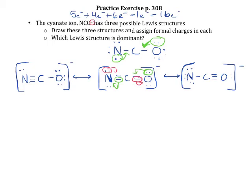These are all valid Lewis structures, but we can use formal charge to figure out which one is the best. To calculate formal charge, the first thing is to think about how many valence electrons each atom brought. Nitrogen brought five, carbon brought four, and oxygen brought six.